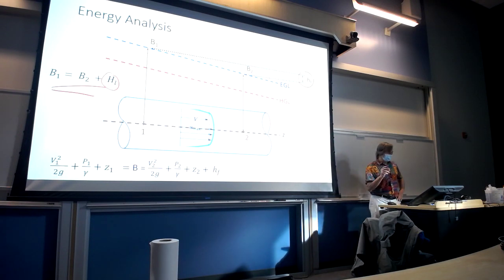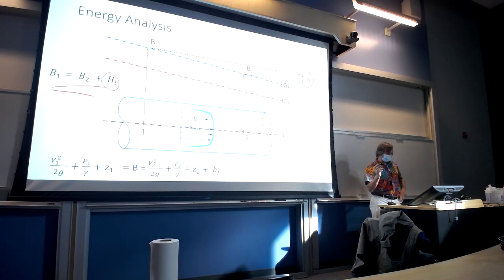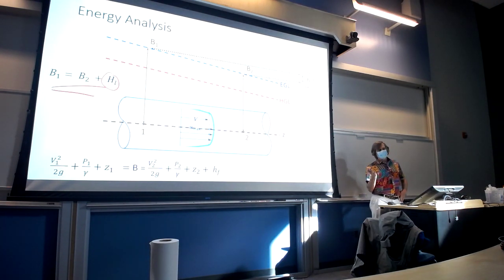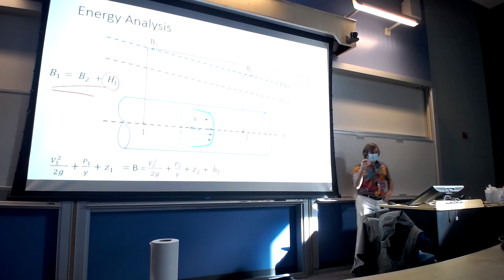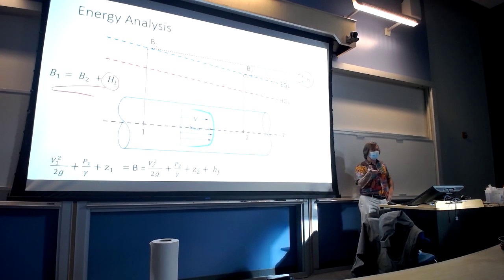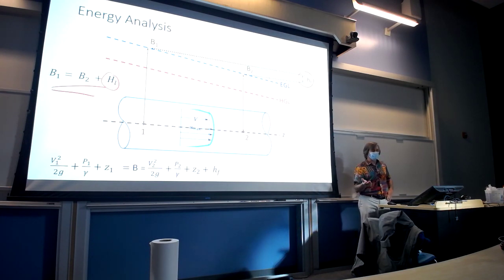The upstream energy, in this case B1, is always greater than the downstream energy, in this case B2. The difference is energy losses. In other cases, there may be mechanical energy involved as well — that could be a pump or a turbine.